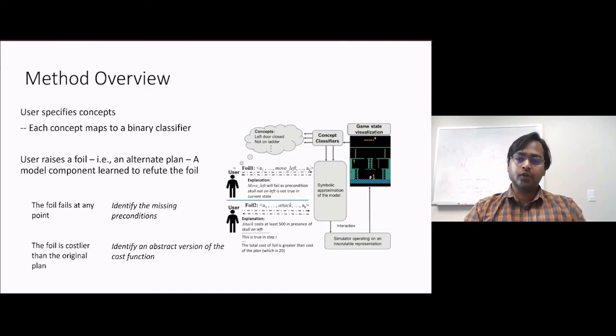And an explanation here corresponds to the system coming up with or identifying a model component that is sufficient to refute the foil. That is sufficient to show why the current system's plan is better than the alternative the human had in mind.